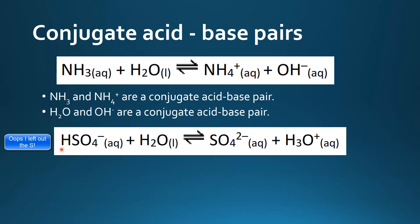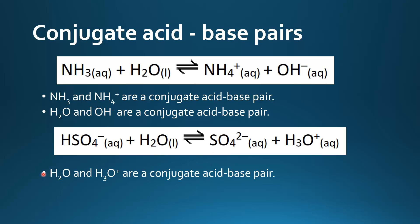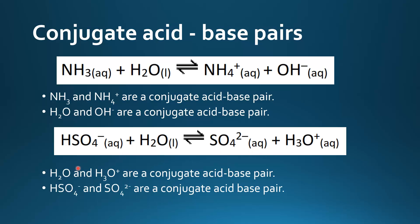Here we have another example: HSO₄⁻ is donating a proton to H₂O, so HSO₄⁻ is the Brønsted-Lowry acid and H₂O is acting as a Brønsted-Lowry base. On the right side, SO₄²⁻ is accepting a proton from H₃O⁺ in the reverse reaction, so H₃O⁺ is acting as a Brønsted-Lowry acid and SO₄²⁻ is acting as a Brønsted-Lowry base. Therefore, H₂O and H₃O⁺ are a conjugate acid-base pair, and HSO₄⁻ and SO₄²⁻ are a conjugate acid-base pair because they differ by a proton.